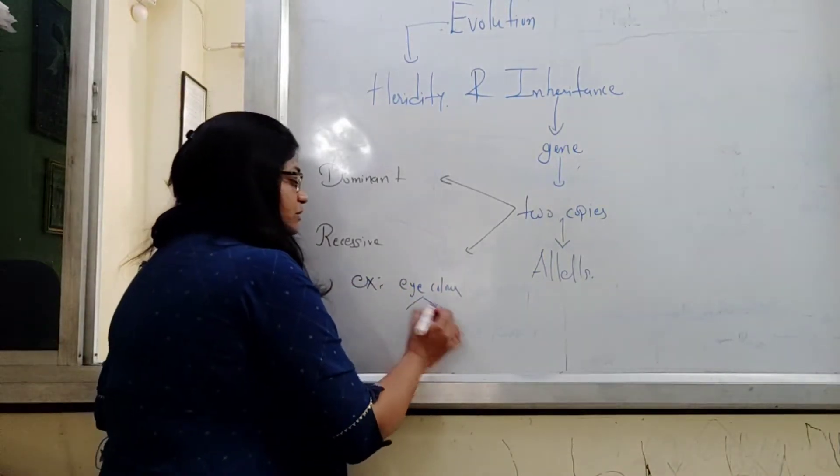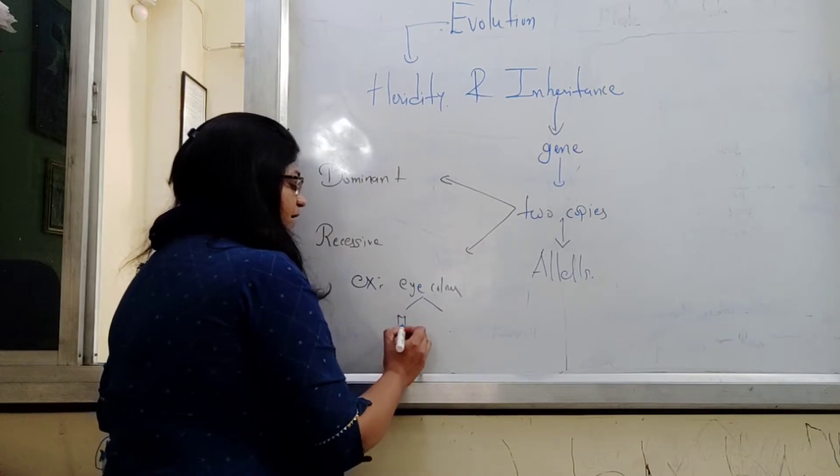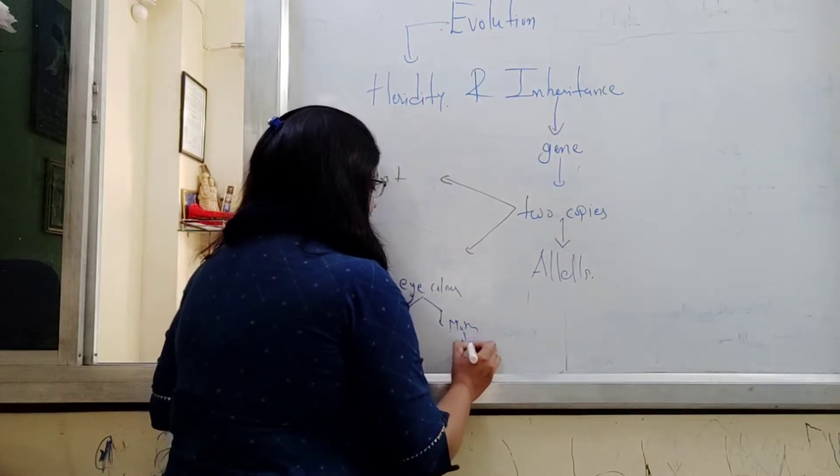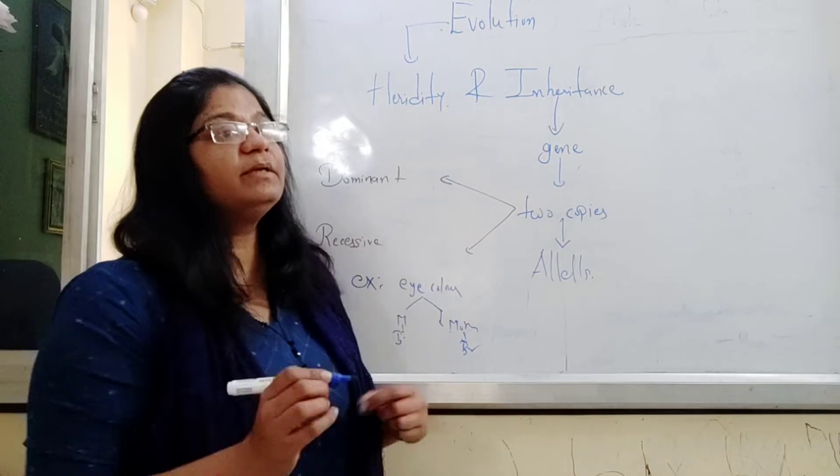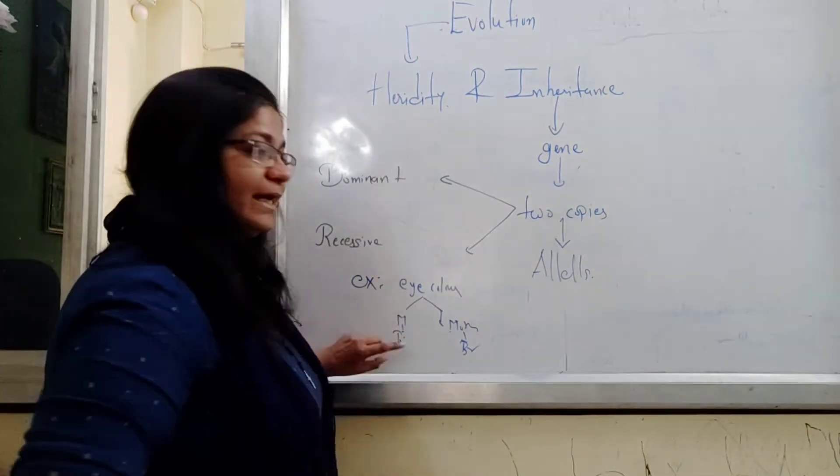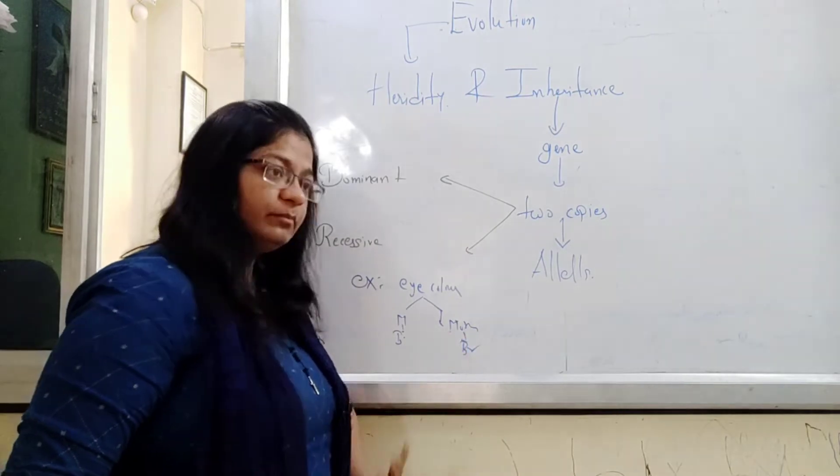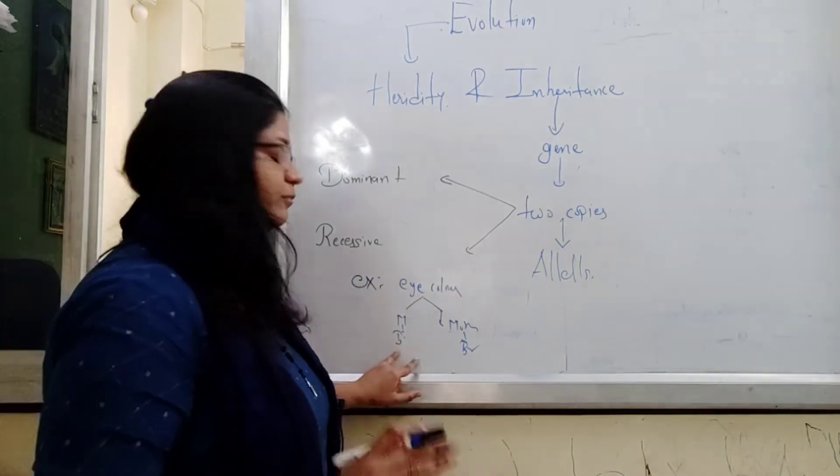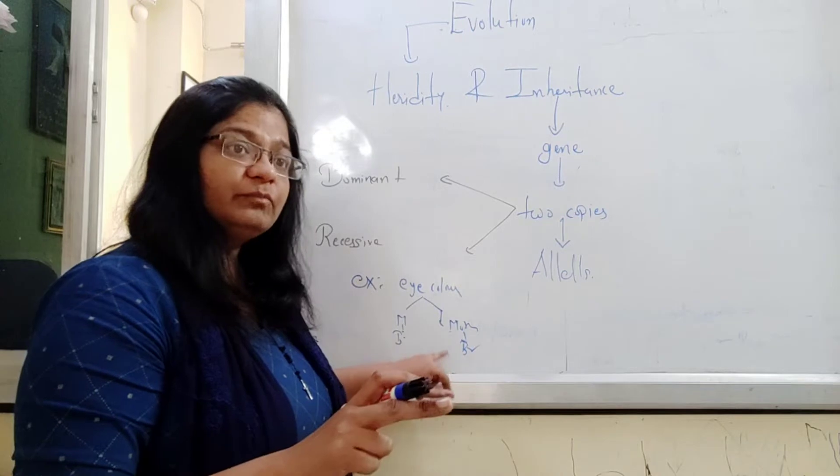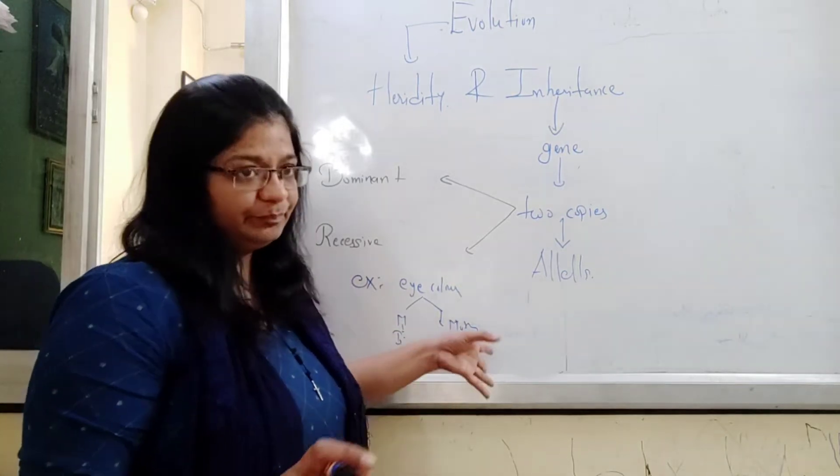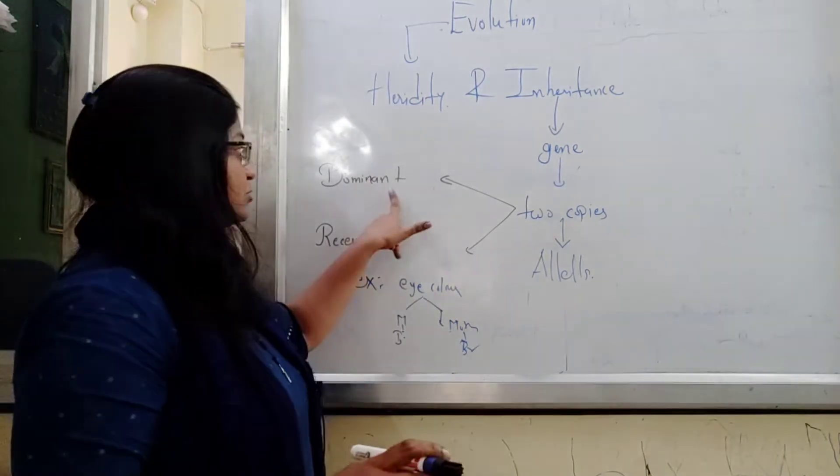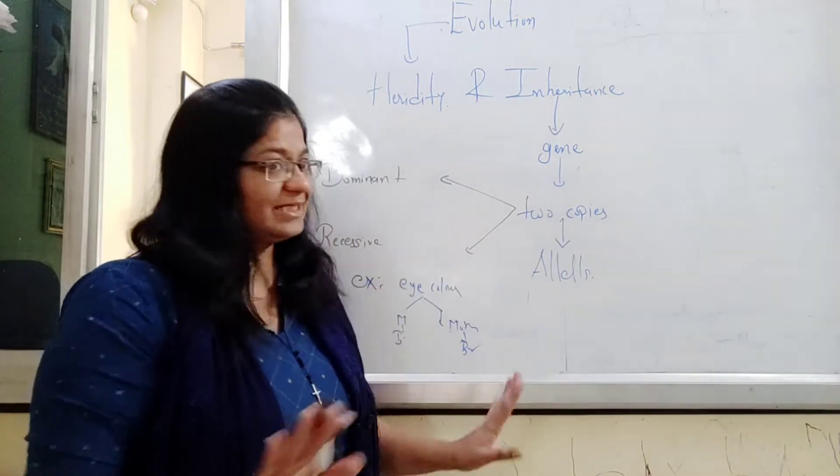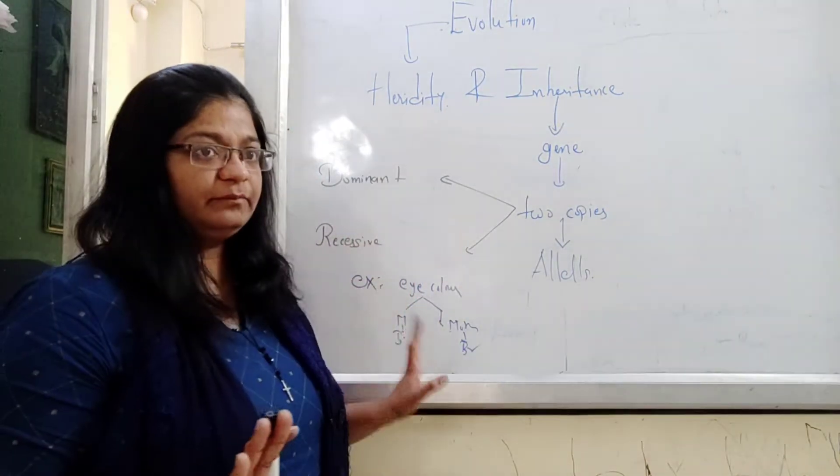As an example, suppose a couple in which male is having black eyes and female mother is having brown eyes. So what the baby would be having color of eye? He would be getting one gene from father, one gene from mother. The gene which is getting expressed, that color will be the eye color. If father's gene is expressed, then the baby's eye color would be black. If mother's genes are getting expressed, then the eye color would be brown. So the character which is getting expressed, it is called dominant. Jo express ho ta hai, or jo transfer ho raha hai but express nahi hua, that is called recessive. Clear, this much?